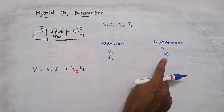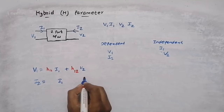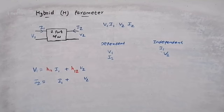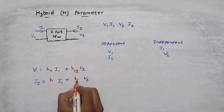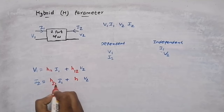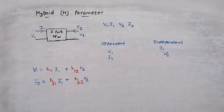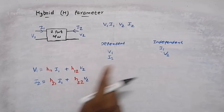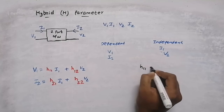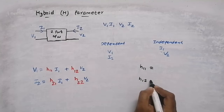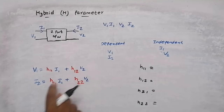We can also find i2 using i1 and v2. The constants for this equation are h21 and h22. This is the equation for finding i2 using i1 and v2. The four constants we need to find are h11, h12, h21, and h22.